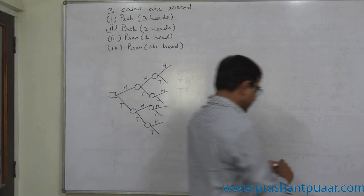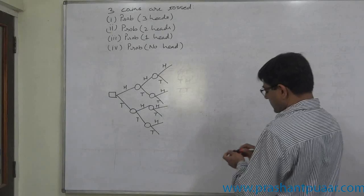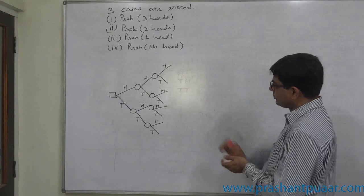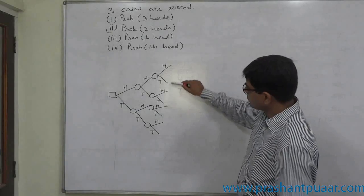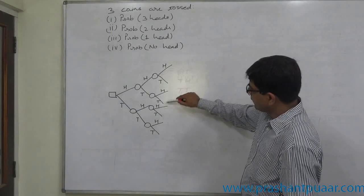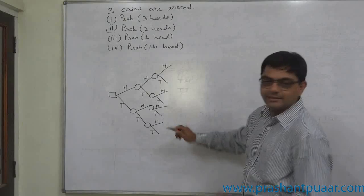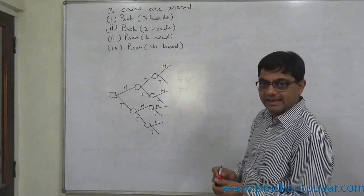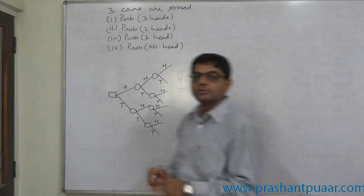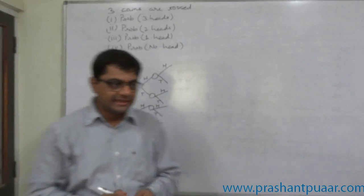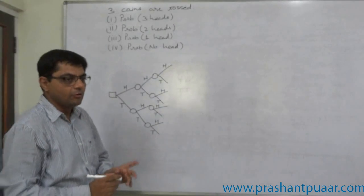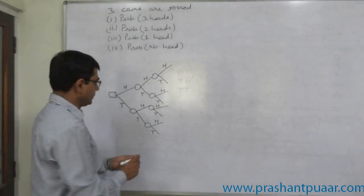So the total number of possible outcomes comes to one, two, three, four, five, six, seven, eight. Eight outcomes are possible if three coins are tossed.